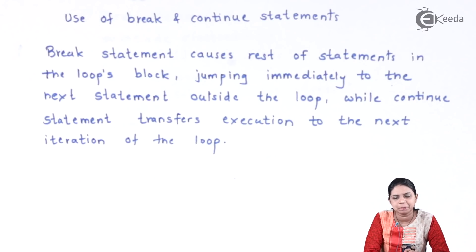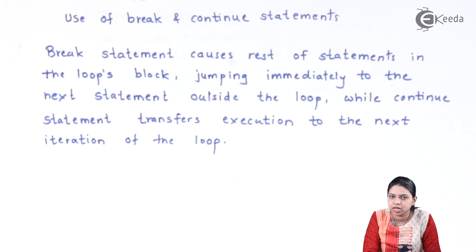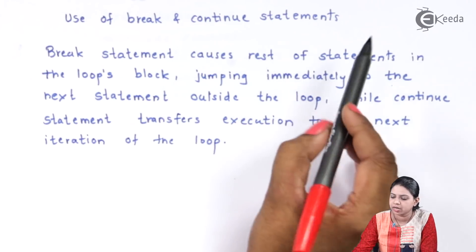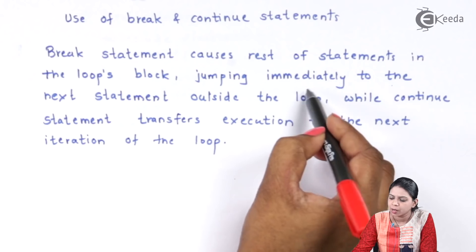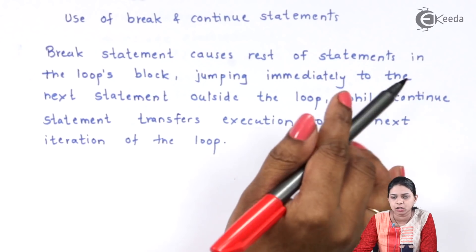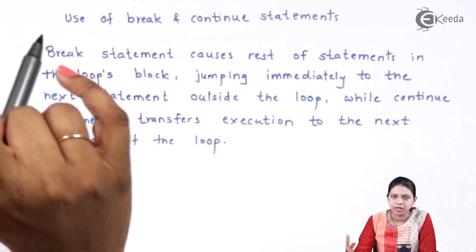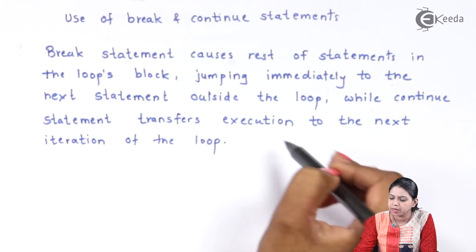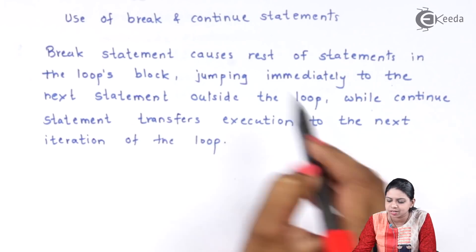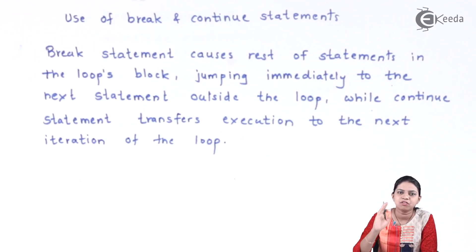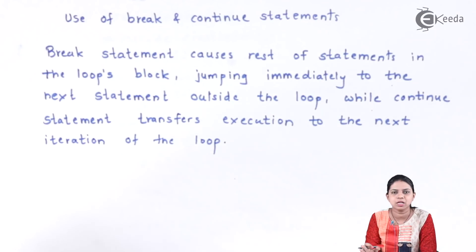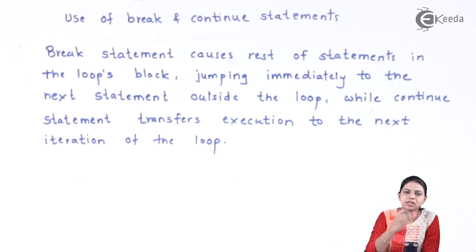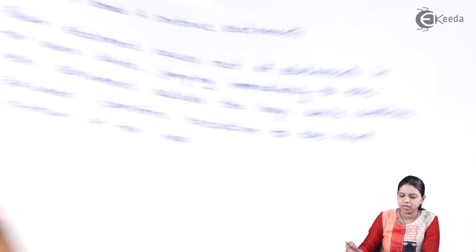Let's see some examples of break and continue. Break causes the rest of the statements in the loop block to be skipped, jumping immediately to the next statement outside the loop — so break causes control to come directly out of the loop. Whereas continue transfers execution to the next iteration; whatever you have written after the continue statement gets skipped and control rotates back to the beginning of the loop.